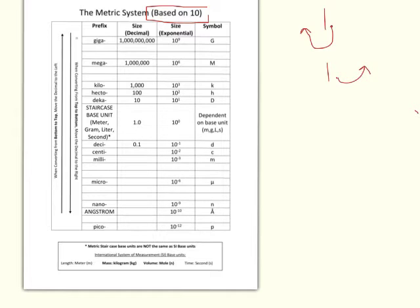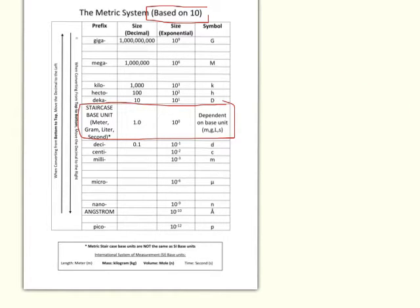I highly suggest printing off this reference file — it's on the website. You can bring it in tomorrow; having this sheet with a few notes written on it would suffice for your notes for this video. The first big thing is our staircase base unit group on the chart. In the metric system the base units are the meter, gram, liter, and second — abbreviated m, g, l, and s.